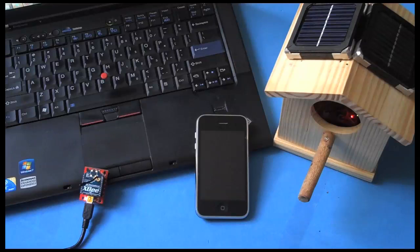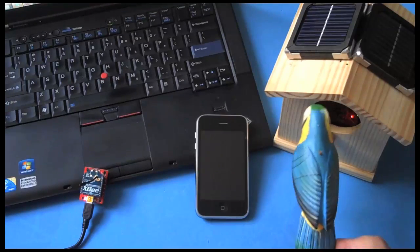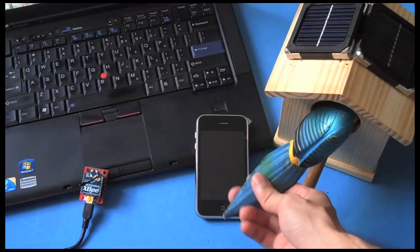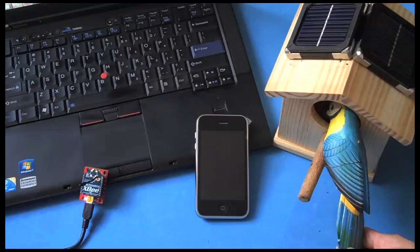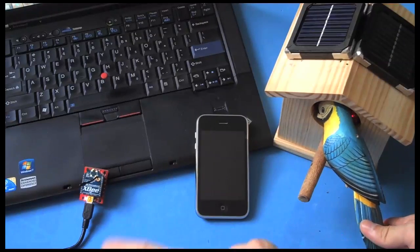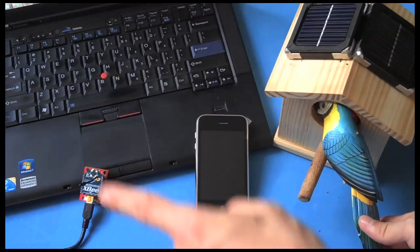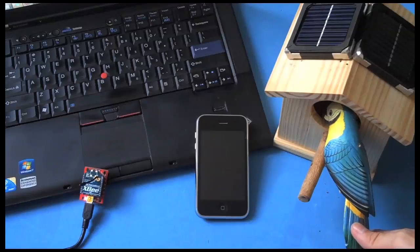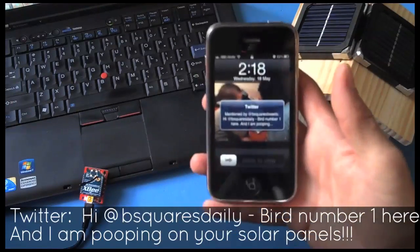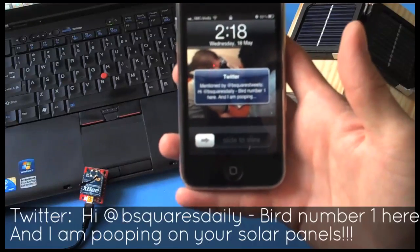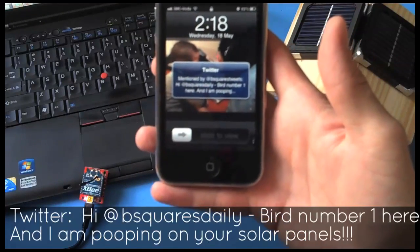So after you have your whole system assembled, you can test it out. Bird visits. Transmission is happening from the birdhouse to the XB wirelessly. It's being sent to Twitter. And there we go. We just received a message that the first bird has arrived at our birdhouse.